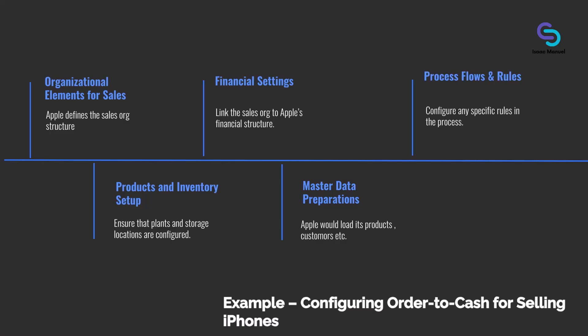Next is process flows and rules: configure any specific rules in the process. For example, if Apple wants that a certain order type requires approval for discounts beyond 10%, that could be a business rule configuration. In S/4HANA Cloud, this might be done via output management, DRF, or workflow settings depending on the scenario. For our purposes, assume Apple is fine with standard — no special approval needed for a normal sale.